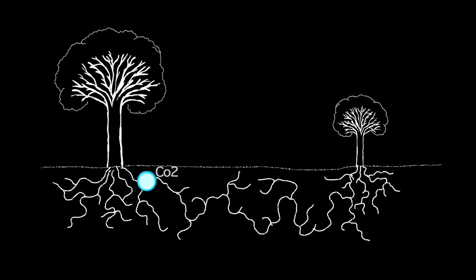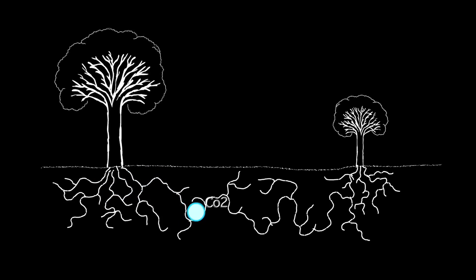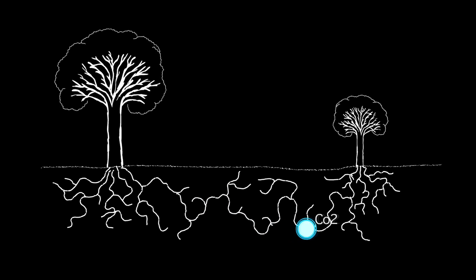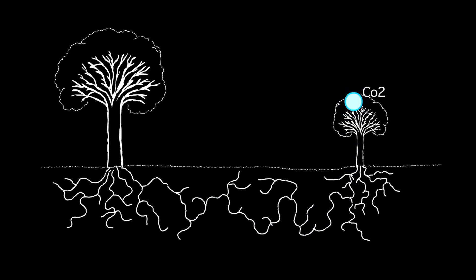So meters away, you can have a plant connected to another plant, and they're just shuffling carbon and nitrogen back and forth according to who needs it.